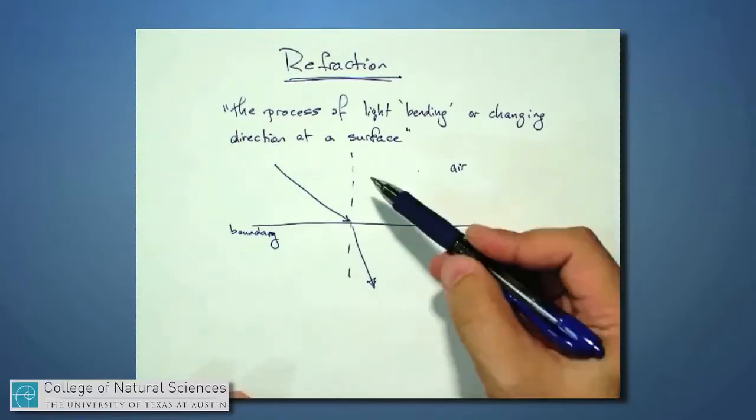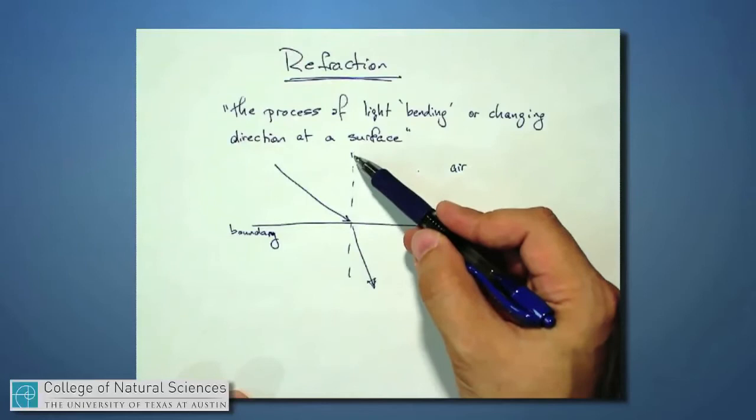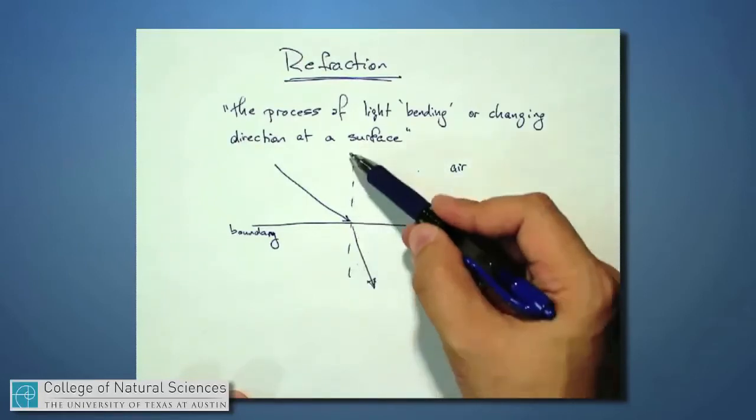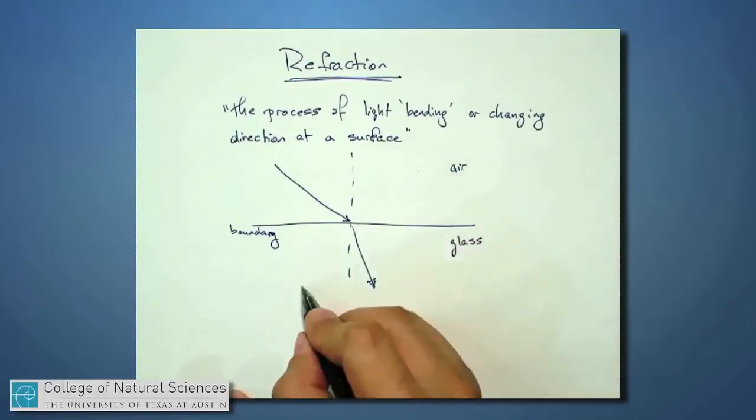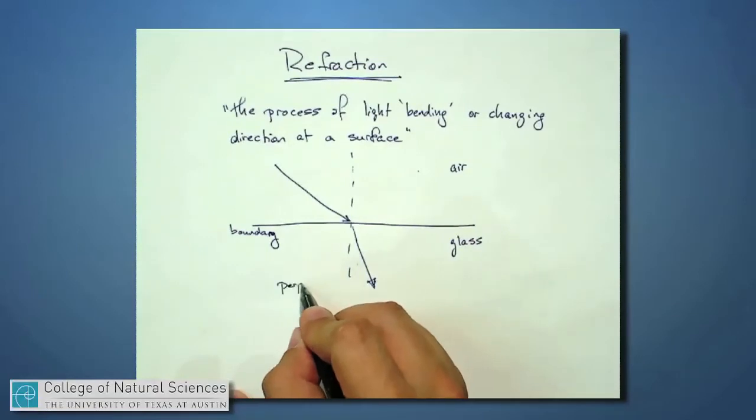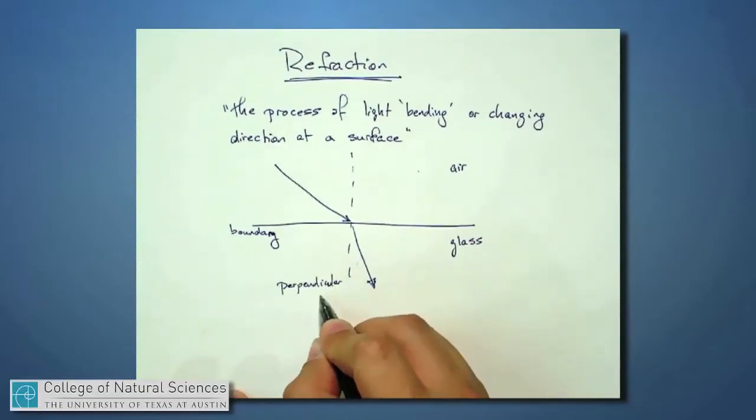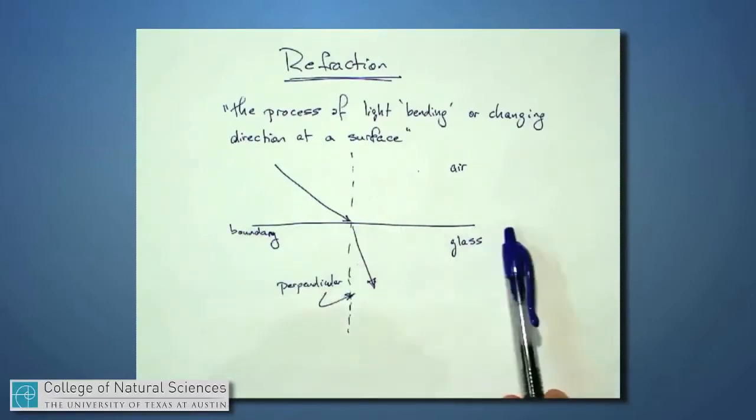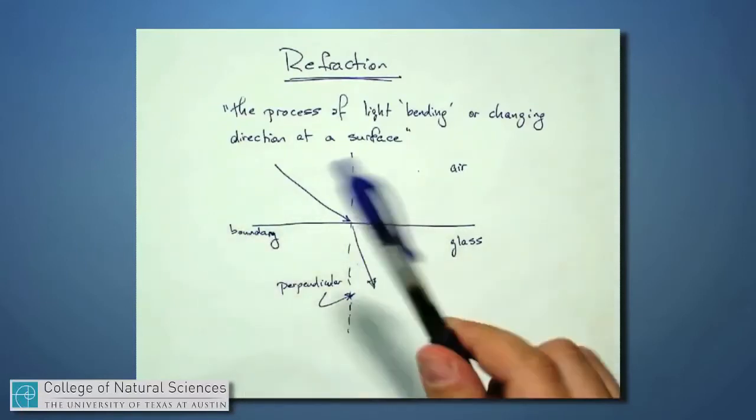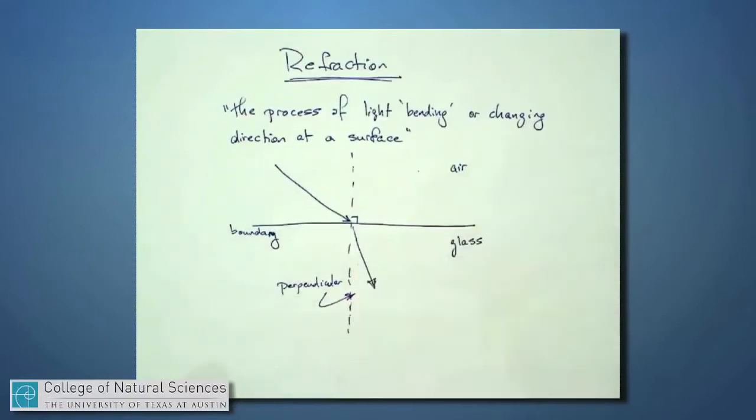Just as with mirrors, it will be convenient for us to define a perpendicular, which I've done with a dotted line right here. And always measure the angle of the light or the direction of the light with respect to that perpendicular line. So we're going to constantly be keeping track of where's the surface, and then what is the direction that's perpendicular.